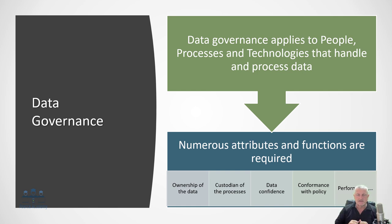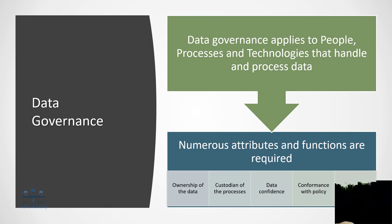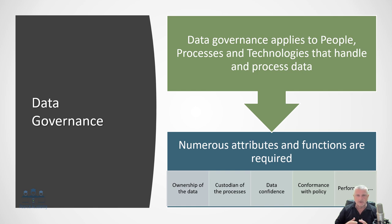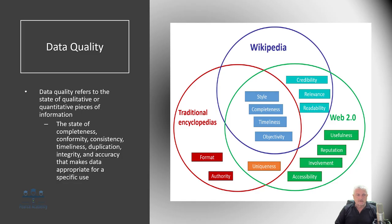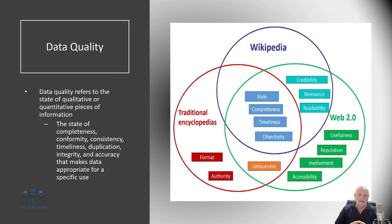There are numerous attributes around data governance functions: ownership of the data, the custodian of the process, data confidence — how well we can trust that data — conformance with policy, and performance of data. Data quality is critical because it refers to the state of qualitative or quantitative pieces of information. Data quality is the state of completeness, conformity, consistency, timeliness, duplication, integrity, and accuracy, which makes it appropriate for specific use.